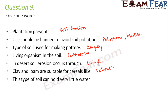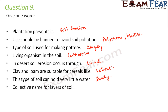This type of soil can hold very little water — that is sandy soil, because water retention is very less and water drains very quickly through the large spaces between the big particles. Collective name for layers of soil — all the layers such as O horizon, A horizon, and B horizon are together called the soil profile. That entire vertical section of soil from O horizon to C horizon is termed the soil profile.